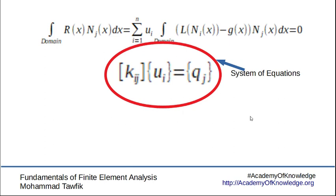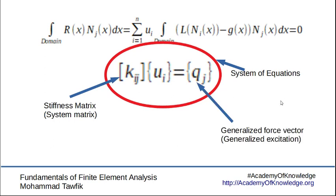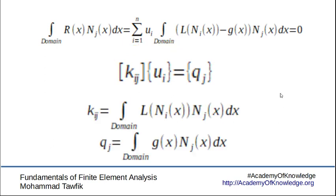This system of equations can be solved. We also called this matrix the stiffness matrix or the system matrix, and this is the generalized force vector. The general term for the stiffness matrix is given by this equation, while the general term for the generalized force is given by this relation. This is a quick review of the Galerkin method.